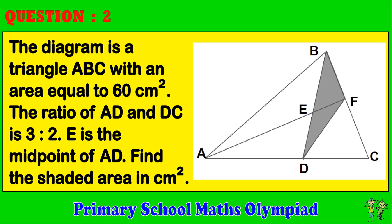Question 2. The diagram is a triangle ABC with an area equal to 60 cm². The ratio of AD to DC is 3 to 2. E is the midpoint of AD. Find the shaded area in cm².